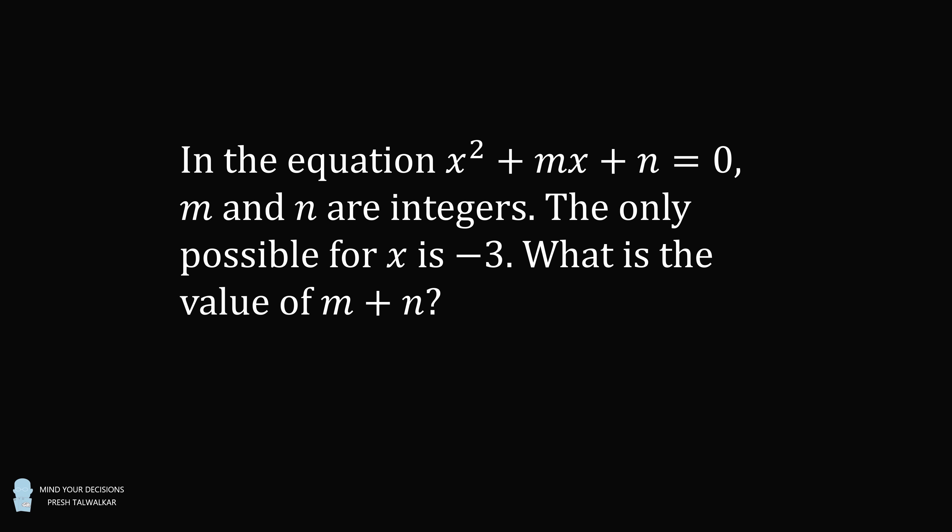Problem 1, the appetizer. In the equation x squared plus mx plus n is equal to 0, m and n are integers. The only possible value for x is negative 3. What is the value of m plus n? This is said to be one of the hardest questions on the American standardized test, the ACT.